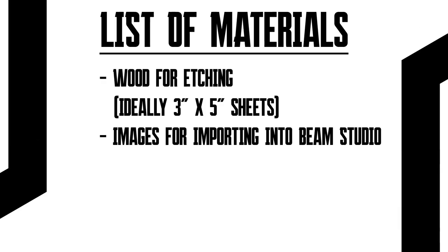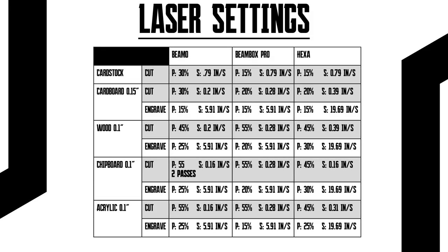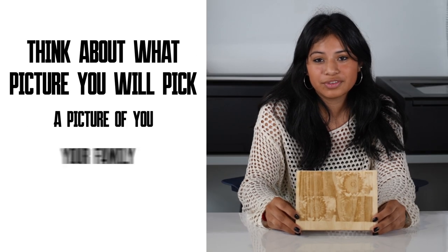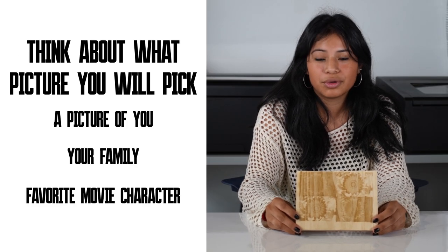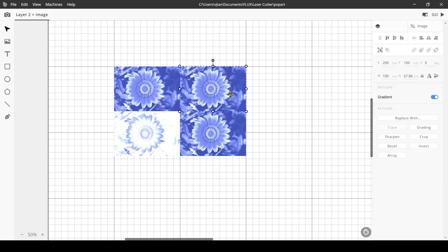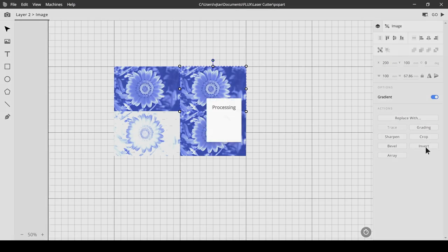Hey guys, today I'll be making a photo engraving. First, I started off by finding a picture of a flower in Google, but you can use any picture you want. Then I placed the picture into Beam Studio, duplicated the picture four times, and then inverted these two pictures.